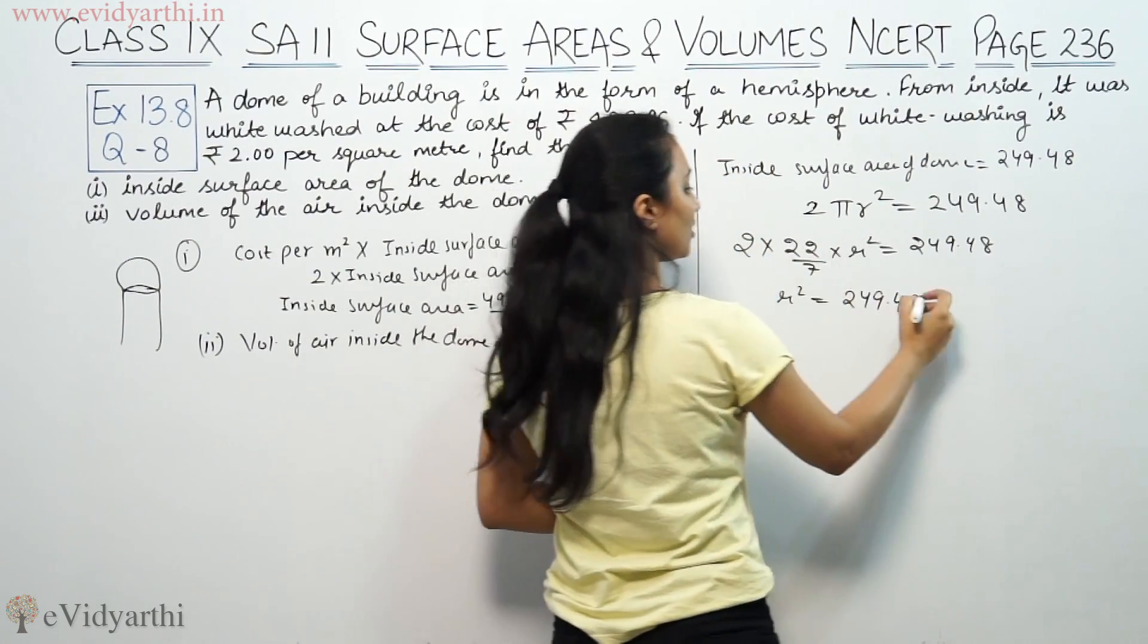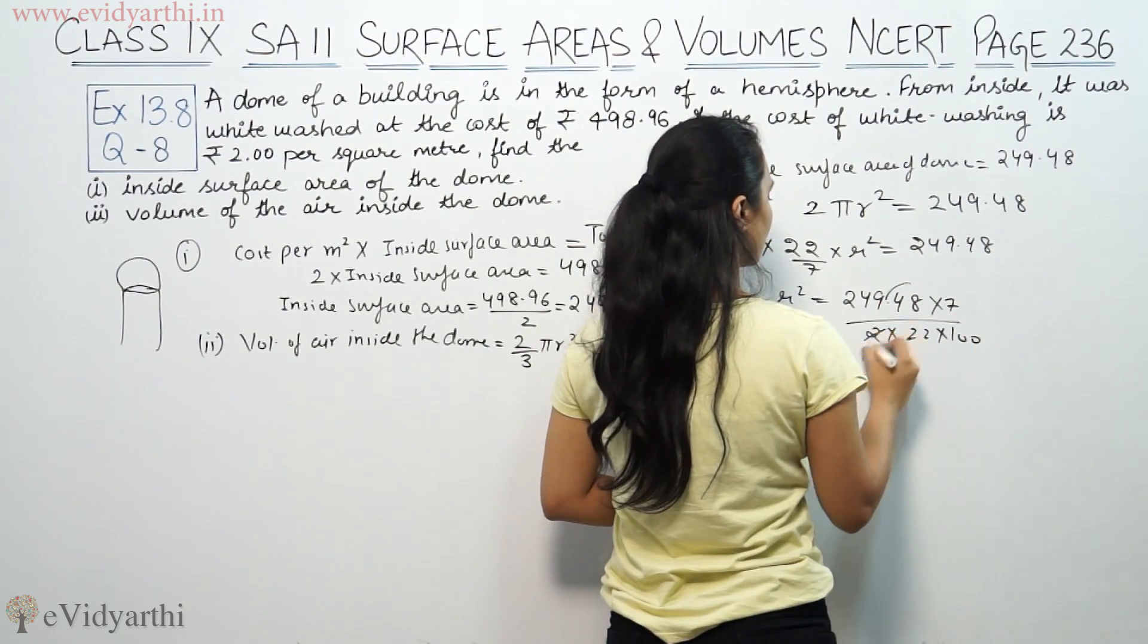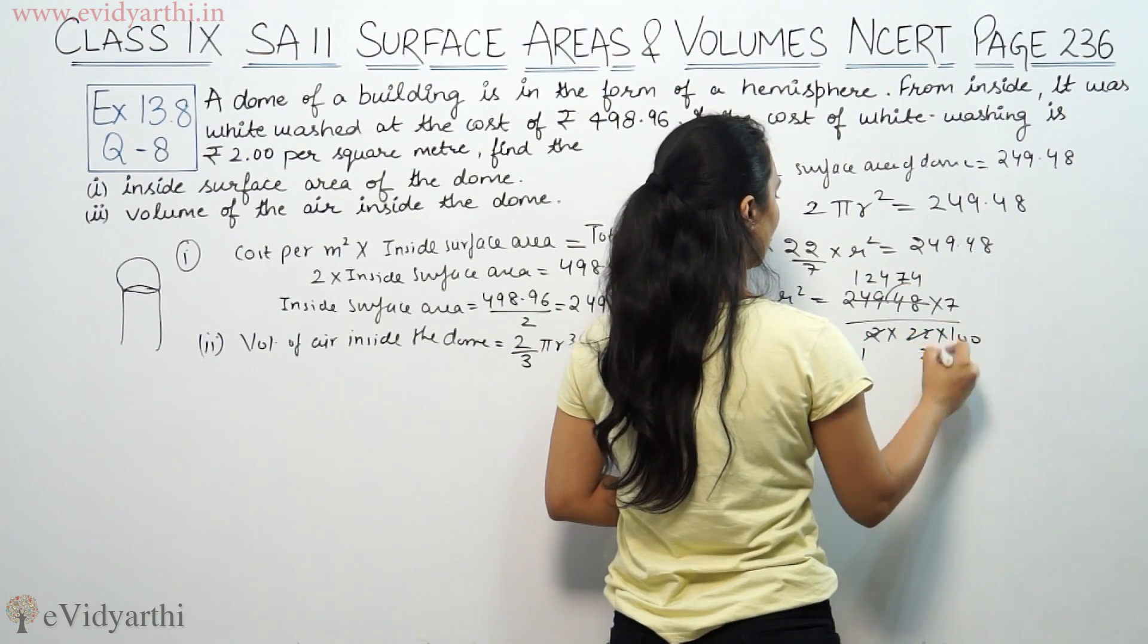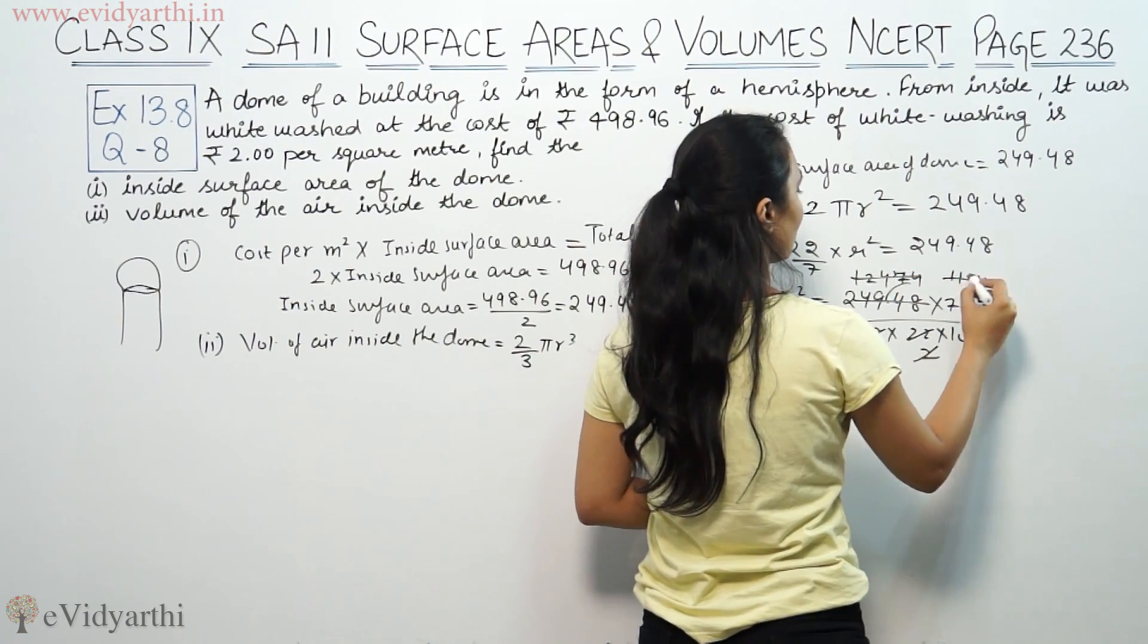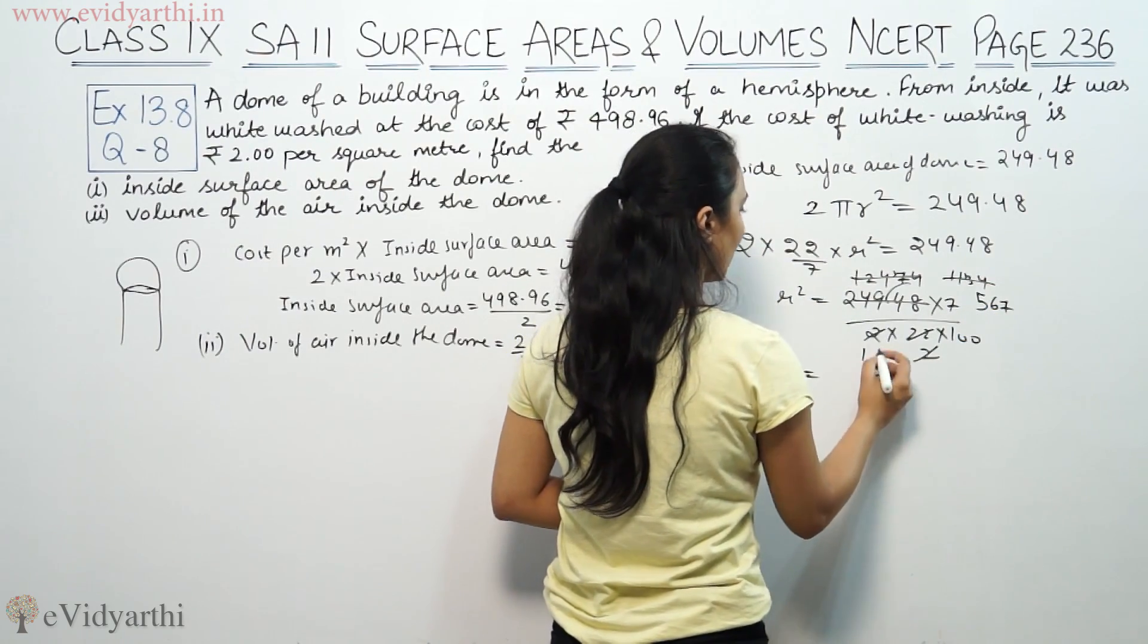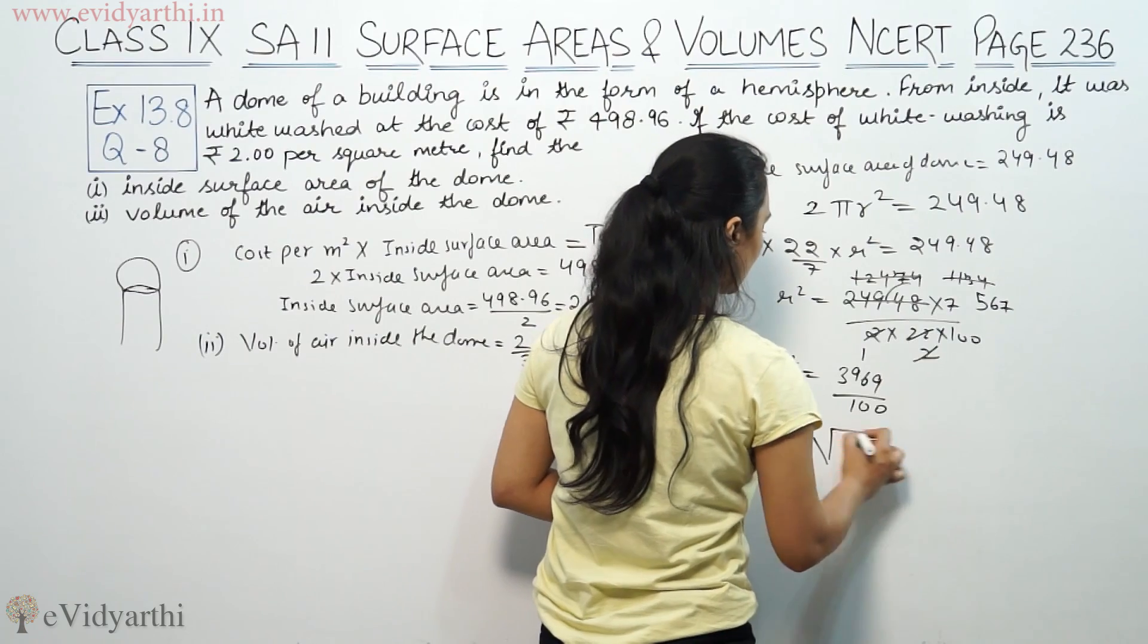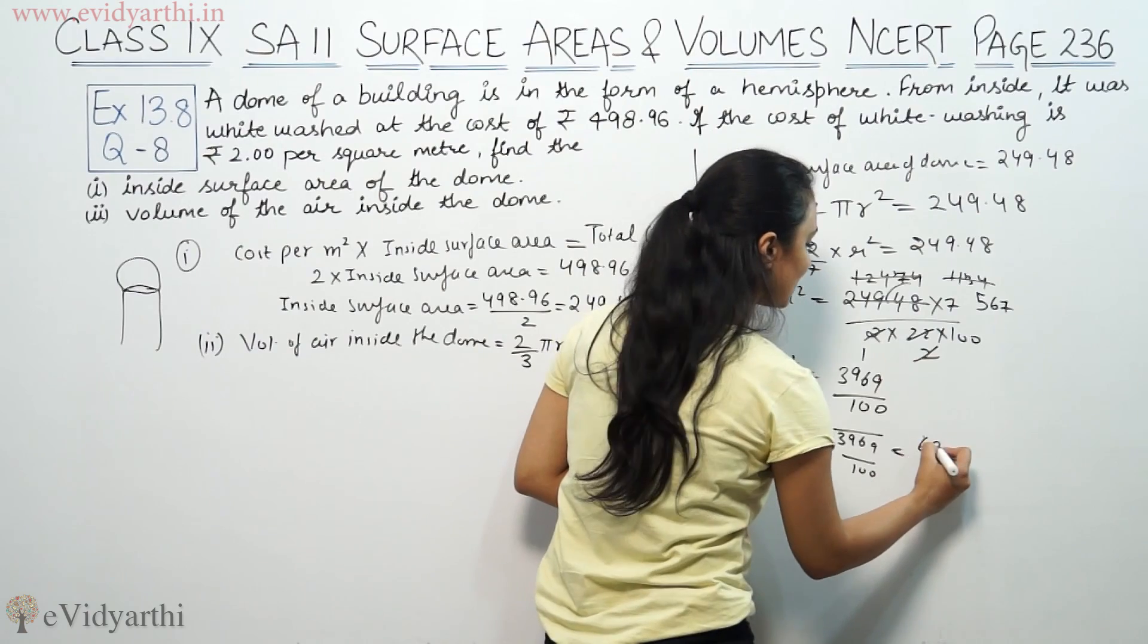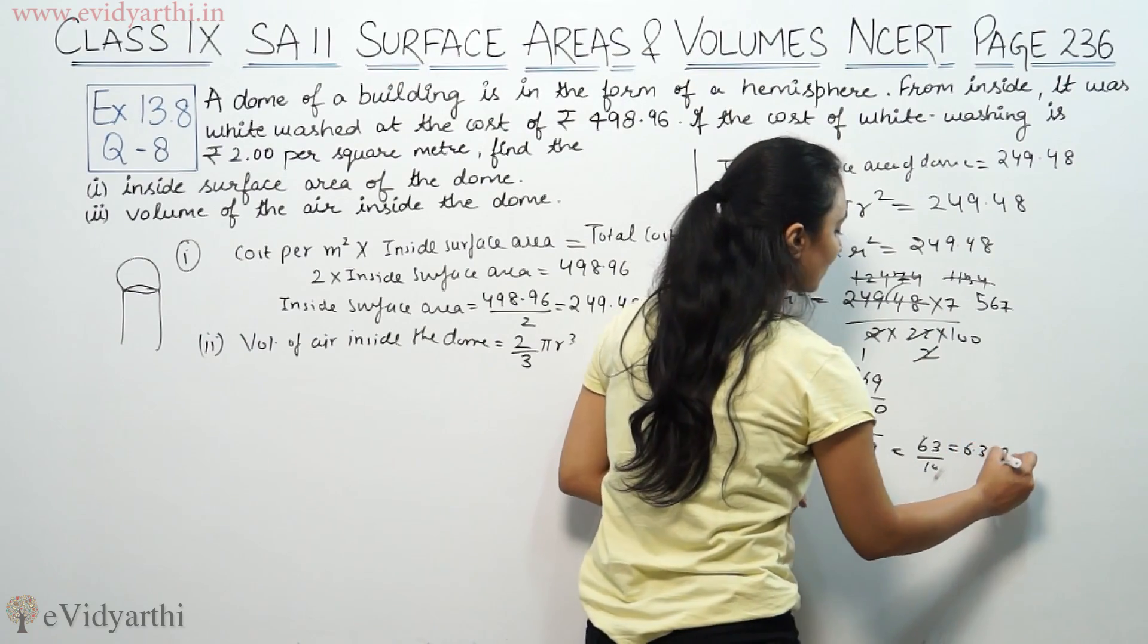So r² equals 249.48 × 7 / (2 × 22). Calculating: 249.48 × 7 / 44 equals 39.69. So r equals √39.69 = 6.3 meters.